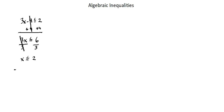Now we want to know how to show this solution on a number line. X is less than or equal to 2, so we're going to show 2, and from 2 going to the left getting to smaller values, including 2, which we'll represent with a solid circle. Those are the values on the number line represented by x is less than or equal to 2.